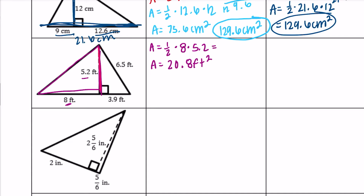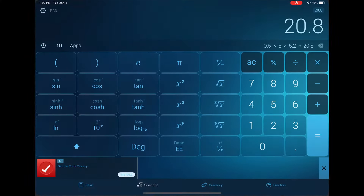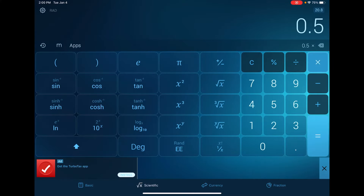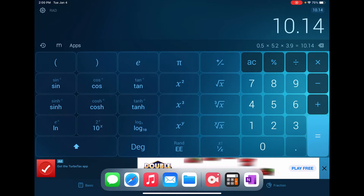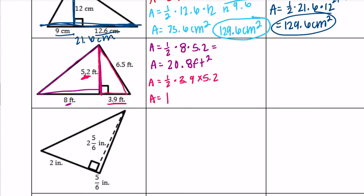Now the second right triangle: the area equals one-half times the base of 3.9 times the height of 5.2. So one-half times 5.2 times 3.9 gives us 10.14. Adding 20.8 plus 10.14, we get 30.94 feet squared.